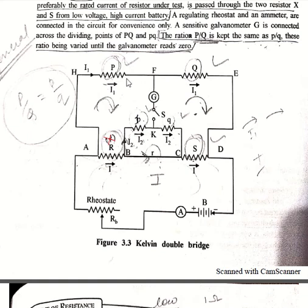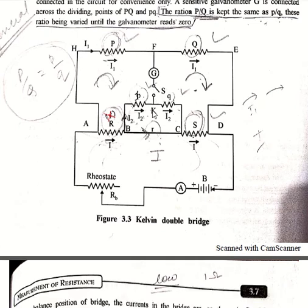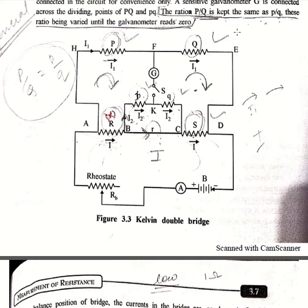A sensitive galvanometer is connected across the dividing point of capital P and capital Q, and in between small p and small q. The ratio of capital P divided by capital Q must equal small p divided by small q. This is a general condition to keep in mind for getting the balance point of the galvanometer. These ratios are maintained until the galvanometer reads zero.